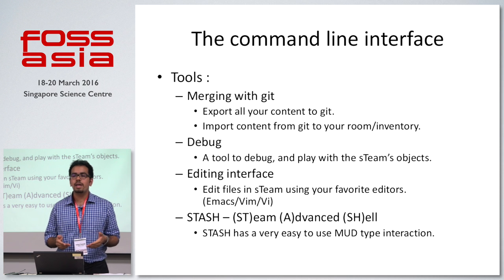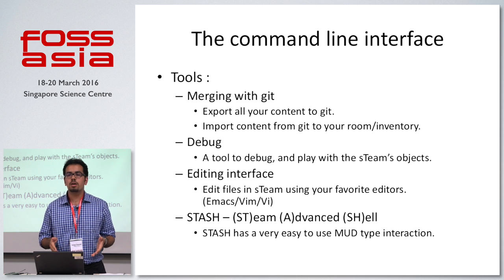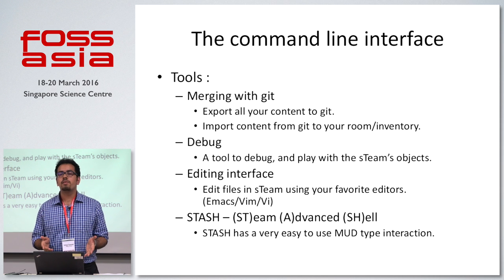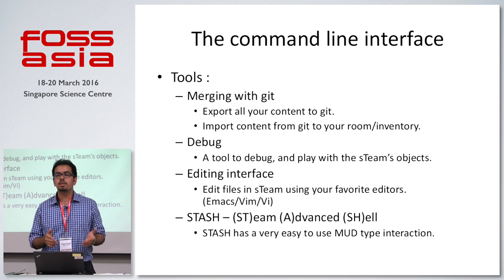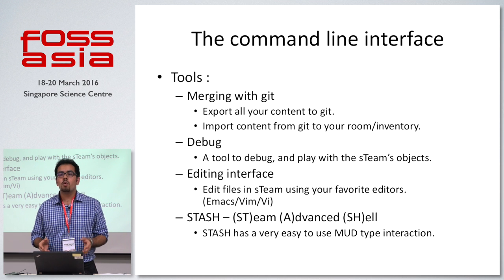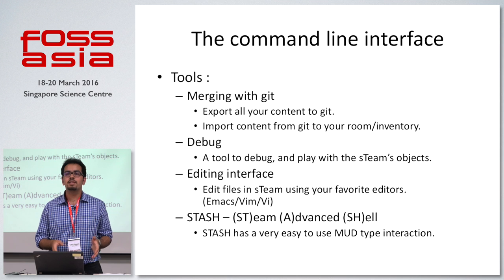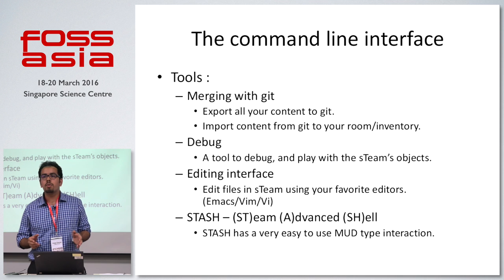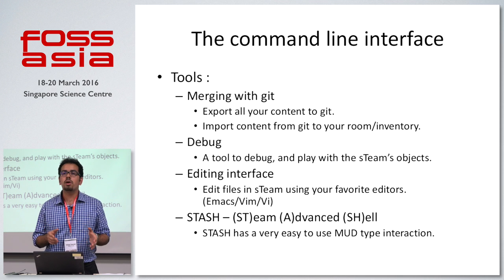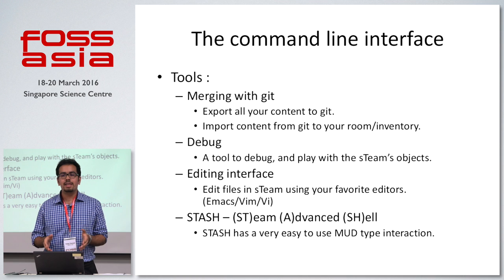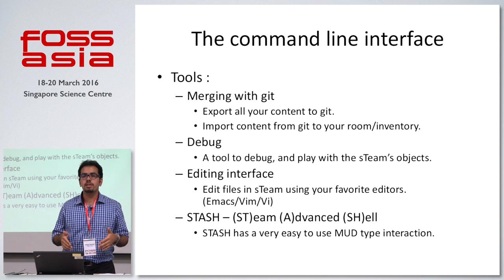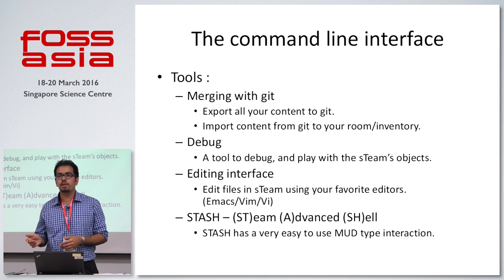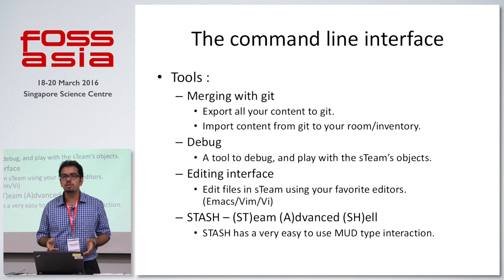One of the tools was merging with Git. Any code that you write onto this application and collaborate — suppose you went to a 24-hour hackathon event and you've contributed and this application is there in your Git account — you can import all your content from Git and get it into S-Team. There's a commit revision history in this; the commit is known as the revision history. You can import all the content and export all the content to Git, committing a whole repo of your application together.